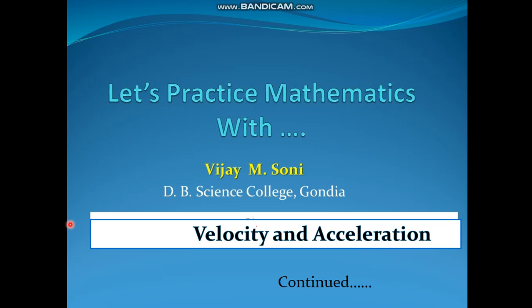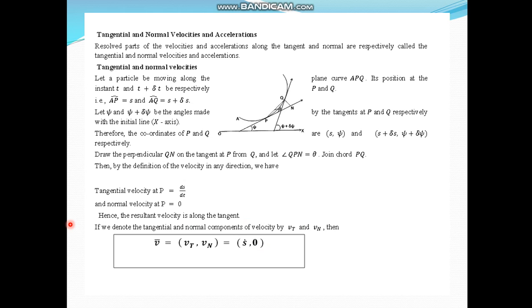Now we'll see some more problems related to velocity and acceleration. Before starting, let us see some new definitions — tangential and normal velocities and accelerations. The resultant parts of velocity and acceleration along the tangent and normal are respectively called the tangential and normal velocities and accelerations.